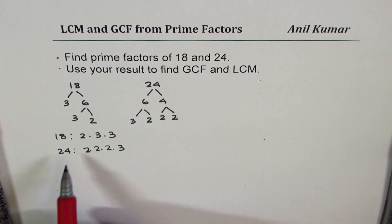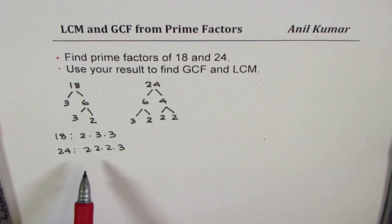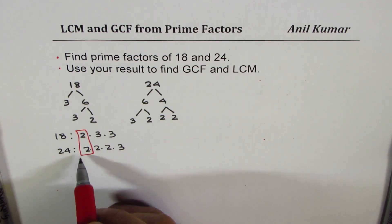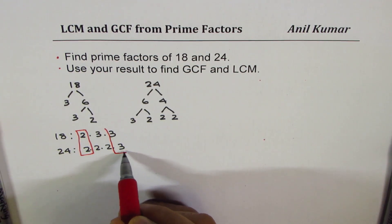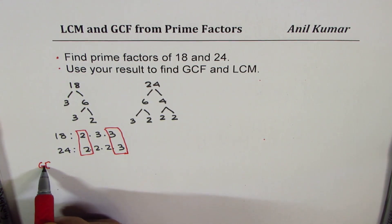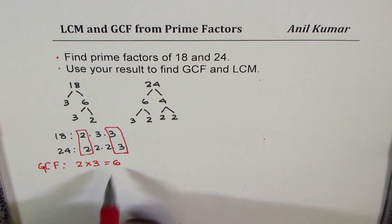When we are looking for greatest common factor, we are actually first looking into common factors and then we have to multiply them to get the greatest common factor. So the common factors are 2 and 3, and therefore we get GCF, greatest common factor, as 2 times 3, which is 6. Now, how do you find LCM from here?